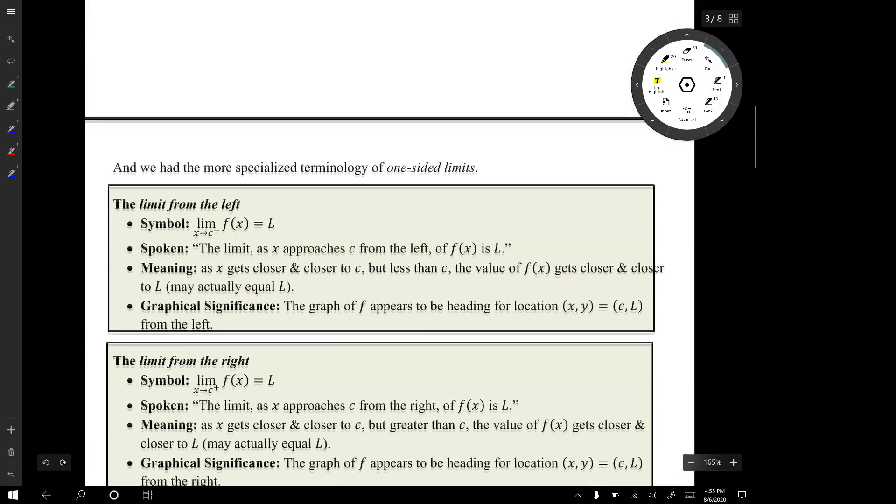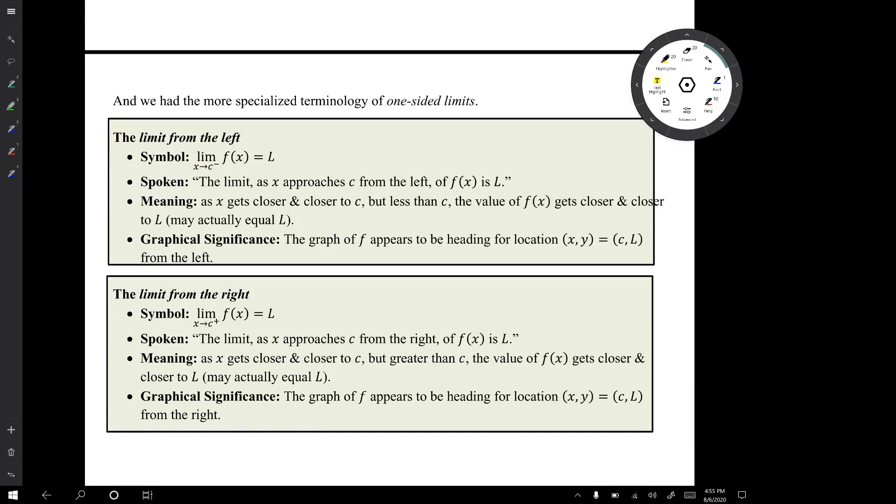Now we had more specialized terminology of one-sided limits in video number two. The limit from the left denoted lim x→c⁻ of f(x) is L. That means the graph is heading for some location (c, L) from the left. And the limit from the right lim x→c⁺, the limit as x approaches c from the right of f(x) is L. The graphical significance of that is the graph appears to be heading for a location (c, L) from the right.